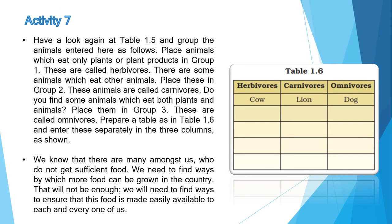Animals क्या खाते हैं उसके basis पर animals को तीन categories में classify कर सकते हैं: herbivores, carnivores और omnivores। जो animals सिर्फ plants या plant products खाते हैं उन्हें herbivores कहते हैं। जो animals दूसरे animals को खाते हैं उन्हें carnivores कहते हैं। और जो animals plants और animals दोनों खाते हैं उन्हें omnivores कहते हैं।